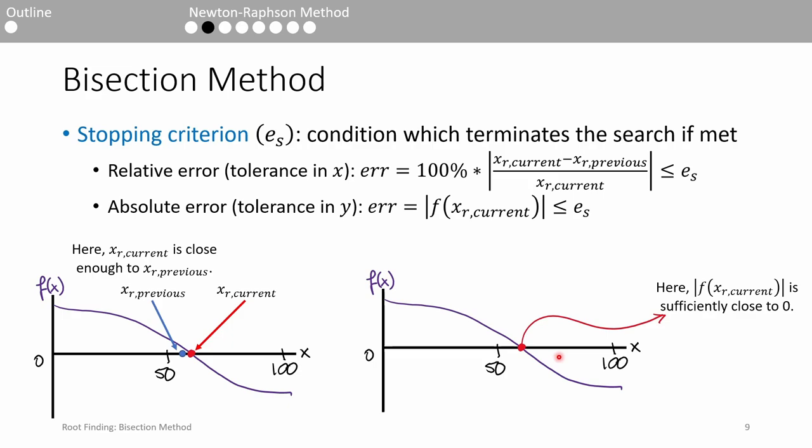How do we know when to stop the algorithm? We use a stopping criterion. A stopping criterion is essentially a tolerance. There are two main stopping criteria we'll use. The first is a tolerance in x. After every iteration, we compute the percent relative error between the estimated root at the current iteration and the estimated root from the last iteration. If the percent change in x is less than some pre-specified tolerance,